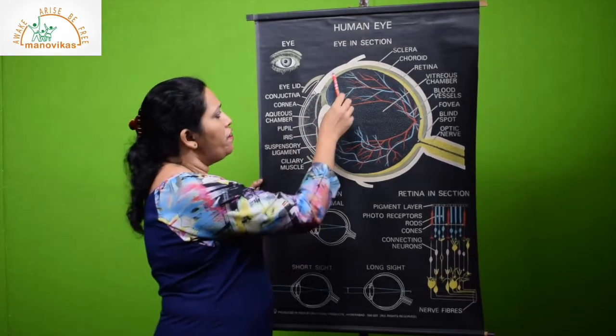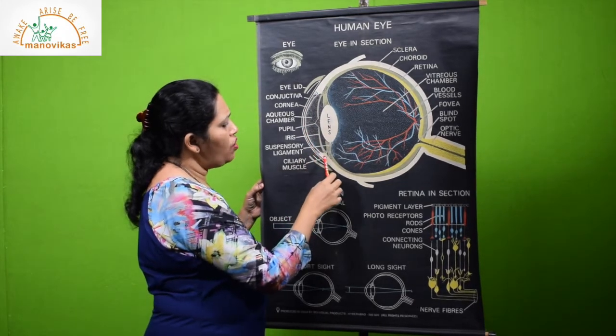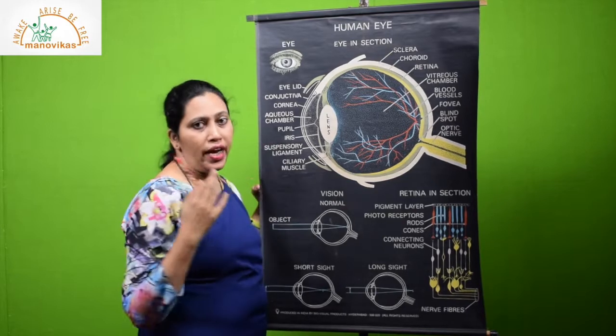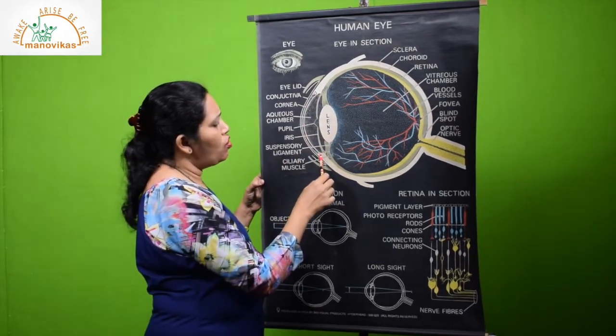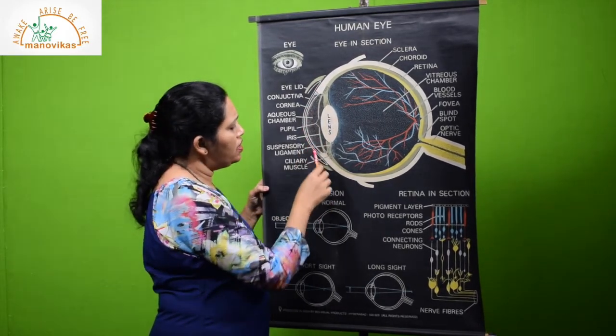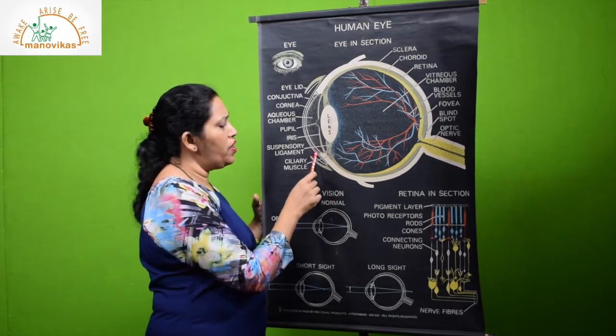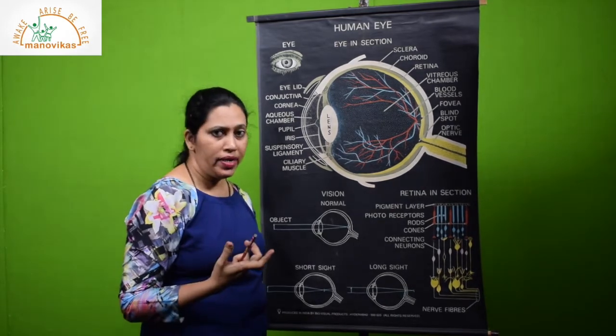In front, it bulges to form something called a cornea. The part which you can see in the eyes, the white color part, is the bulging here and it is also protective in function. It is again covered by a thin, delicate membrane called a conjunctiva. When this conjunctiva is affected by germs, it causes conjunctivitis or sore eyes.